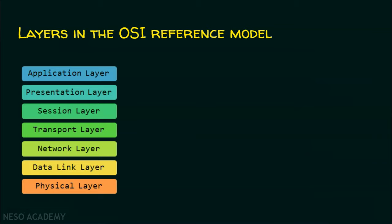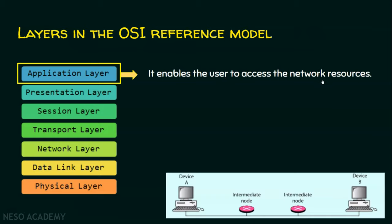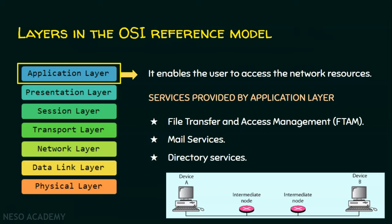We will now focus on the application layer. The application layer enables the user to access the network resources. Suppose there are two devices, device A and device B, and device A wants to send some data to device B. They need some application — that application is going to send the data to the other device. Now we will see what services are offered by the application layer. The application layer provides the following services: it enables the user to do file transfer and access management.